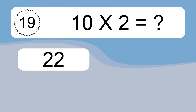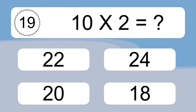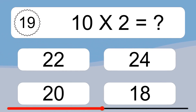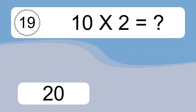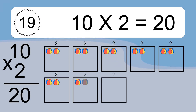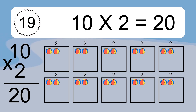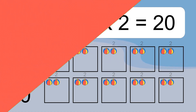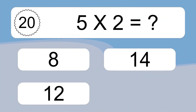10 times 2 equals what? 10 times 2 equals 20. We have 10 boxes, and each box has 2 colorful balls inside. If you count all the balls in all the boxes together, you will have 10 times 2 balls. This equals 20 balls.